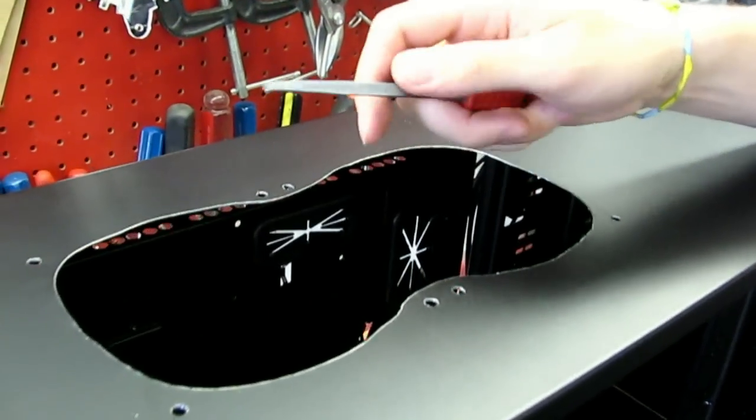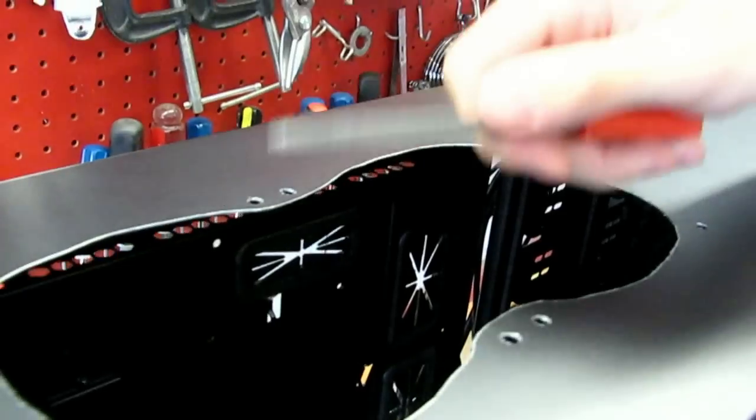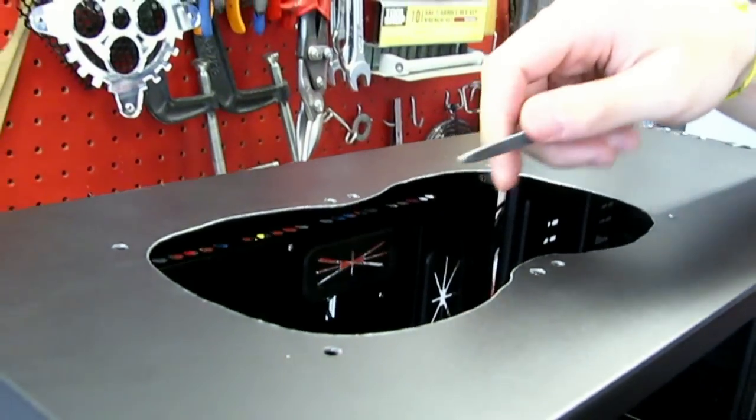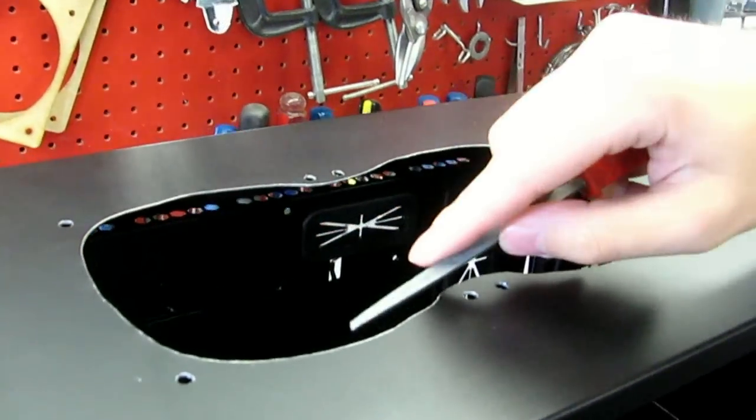So after I've removed the tape I just want to go over all the edges on the top side with just a small hand file just to make sure that there aren't any jagged edges and you didn't miss anything on the cut.